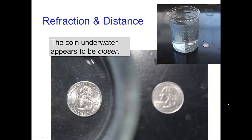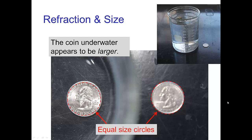If you take another object, say a coin, and put it in the bottom of the glass of water and look carefully, you'll realize that the coin when it's underwater appears to be closer than a similar sized coin that is outside of the glass. Just as you see in these photos here, I have two coins — one inside of a beaker of water and the other one right outside. Not only does the coin that's underwater appear to be closer, it also appears to be slightly larger.